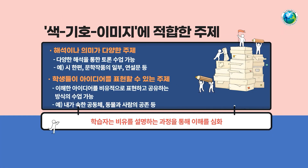색기호 이미지 기법에 적합한 주제는 첫째, 해석이나 의미가 다양한 주제입니다. 이를 통해 다양한 해석을 통한 토론 수업이 가능합니다. 예를 들어 시 한 편, 문학 작품의 일부, 연설문 등이 적합합니다. 또한 학생들이 아이디어를 표현할 수 있는 주제도 적합합니다. 학생들은 아이디어를 비유적으로 표현하고 공유하는 방식의 수업을 통해 더욱 깊이 있는 학습을 할 수 있습니다. 예를 들어 내가 속한 공동체나 동물과 사람의 공존 등의 주제가 이에 해당합니다.